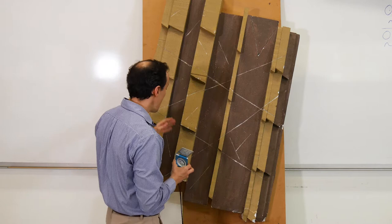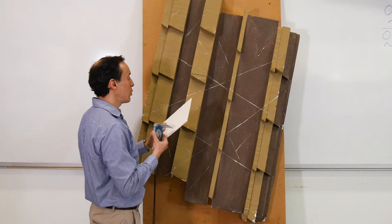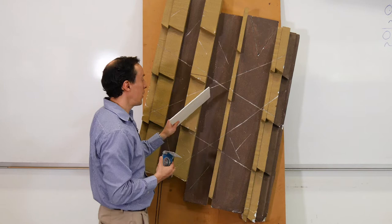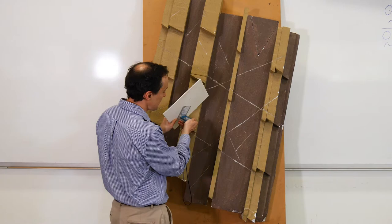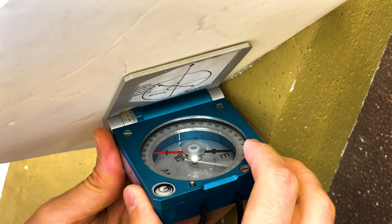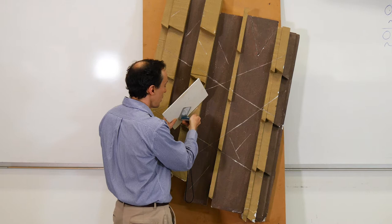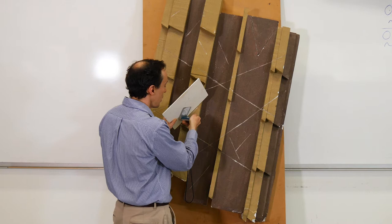Now let's look at how we can measure dip and dip direction of this small discontinuity. For that I'm going to use some aid — I'm going to extend the projection of this discontinuity, and follow the same procedure. I'll press the compass against the projection of this discontinuity, make sure it's level so the bubble is right in the middle of the circle, then release the needle. That gives me a dip direction of about 52 degrees and a dip angle of about 46 degrees.